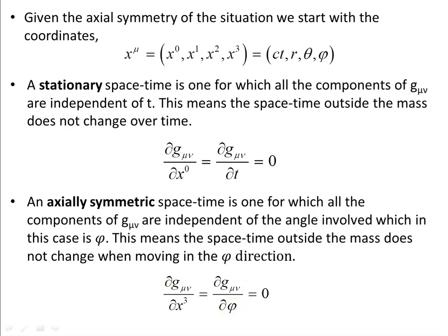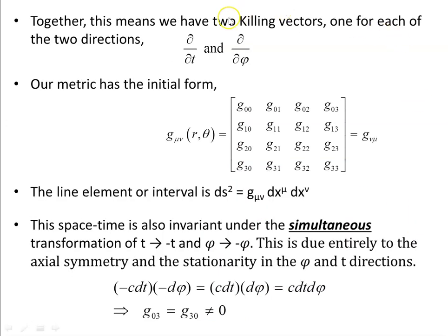So we have two conditions: the metric is independent of the coordinates t and phi, because the partial derivative of the metric with respect to each of these coordinates is zero. Together this means we have two Killing vectors — one for the t direction and one for the phi direction.